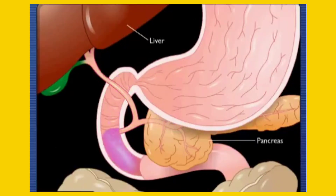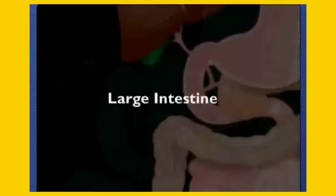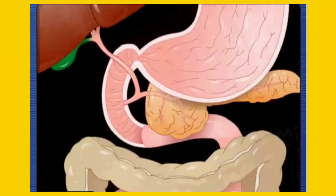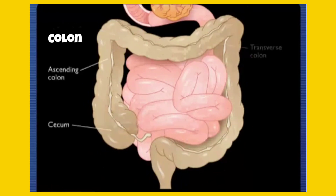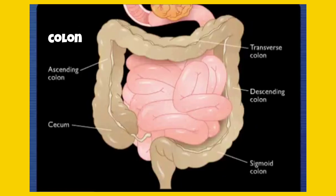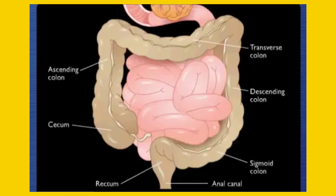Bile from the liver and digestive enzymes from the pancreas enter into the duodenum to aid in digestion. Absorbed nutrients pass from the lumen of the small intestine into the blood. Chyme not absorbed in the small intestine enters the large intestine, also known as the colon, where water and salt are absorbed and chyme is converted into feces. The rectum stores feces until nerve stimulation initiates defecation, resulting in elimination through the anus.